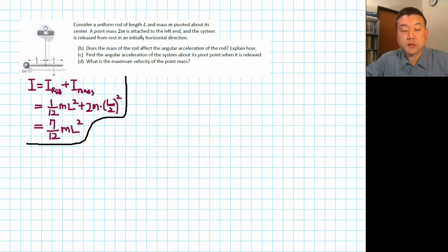Without the rod, the rotational inertia of the whole thing would have been mL²/2, but because of the rod, I have to add 1/12. And this ends up in my total rotation inertia. So if the mass for the rod was heavier, then this portion will be bigger and it will affect the angular acceleration.